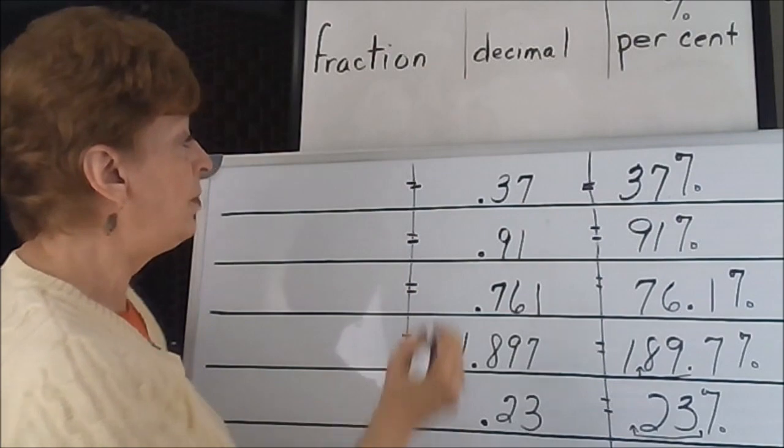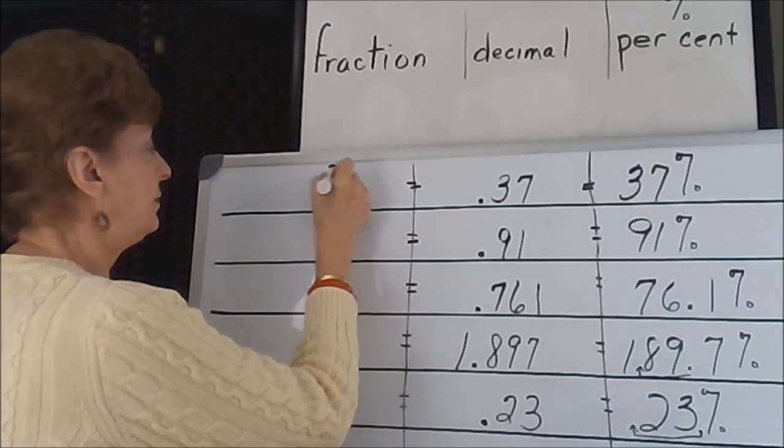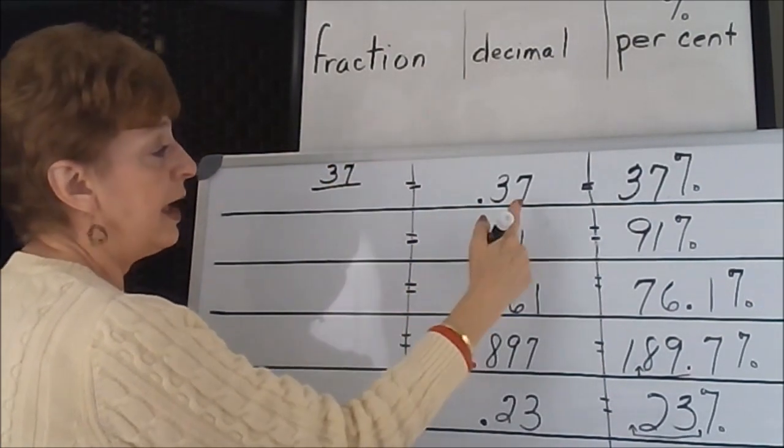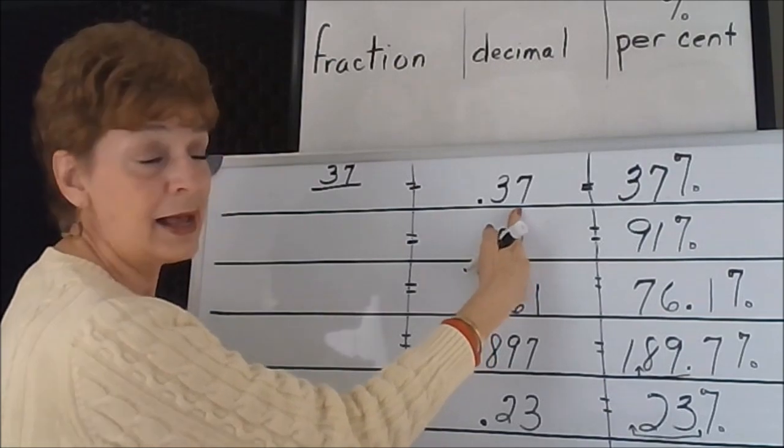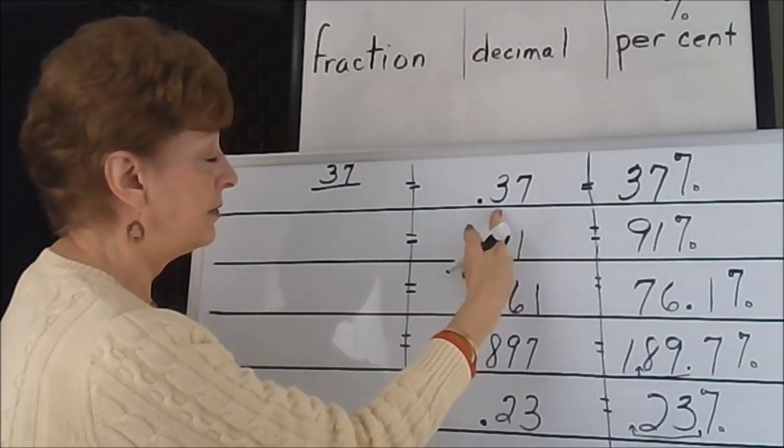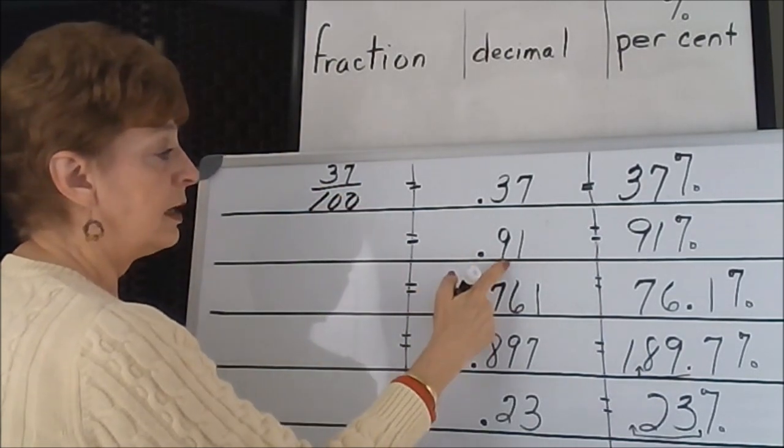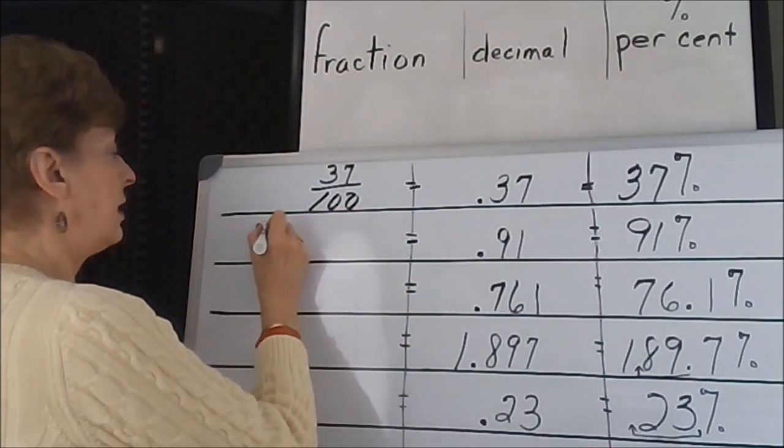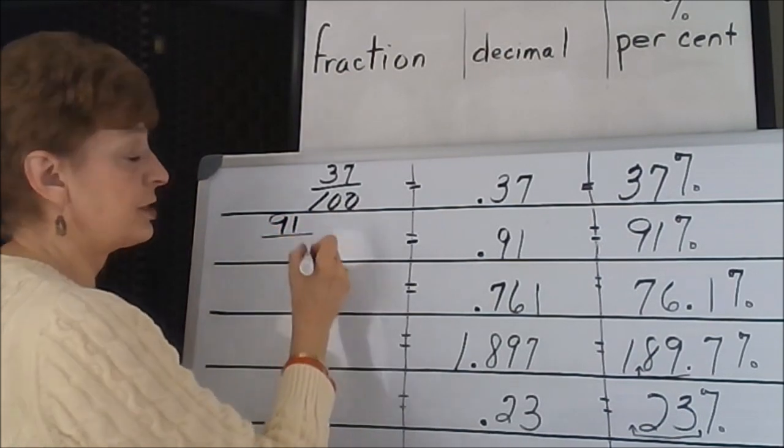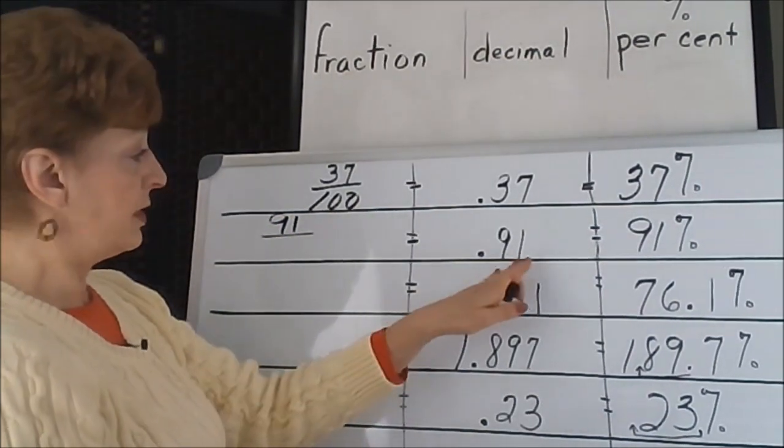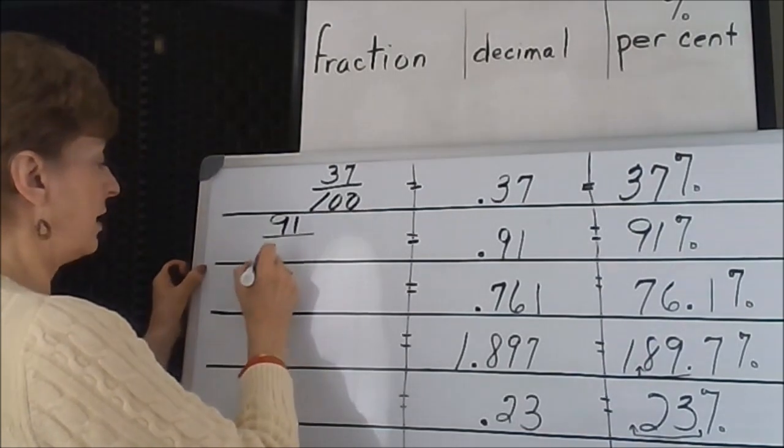37 becomes the numerator of our fraction, and we'll memorialize the last digit of that decimal. The 7 is in the hundreds column, so 37/100. 91 is the numerator of this fraction. The number 1 is in the hundreds column, so 91/100.